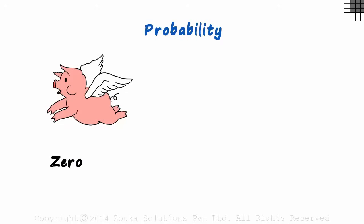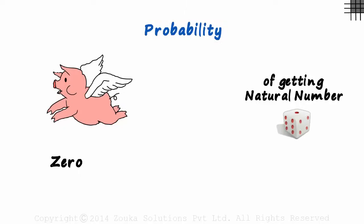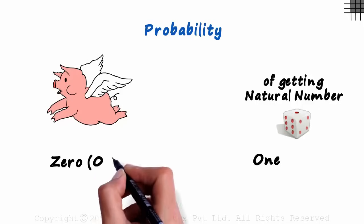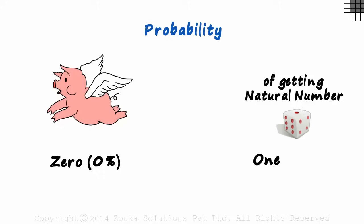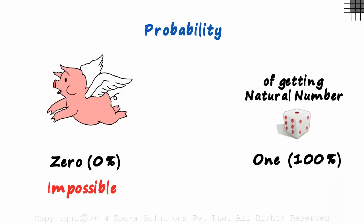Okay, another one. What is the probability of getting a natural number on the roll of a fair die? No matter how the die is rolled, you will get a number between one and six, all of which are natural numbers. The probability is one — we will definitely get a natural number on the roll of a fair die. A probability of zero means there is a zero percent chance of the event occurring; it's an impossible event. On the other hand, a probability of one tells us there is a hundred percent chance of the event occurring. It is a certain event.